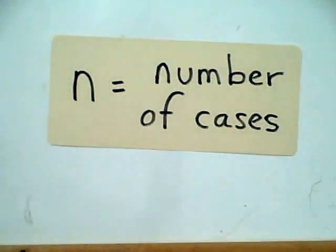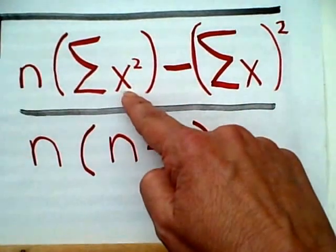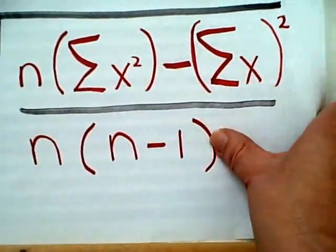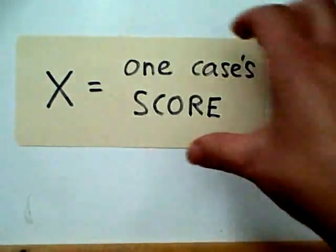Well, that simply means the number of cases. How many subjects or participants are we getting data from? The other thing we see on this particular equation is x here and here, and x simply means one score, a score from a particular person or case.